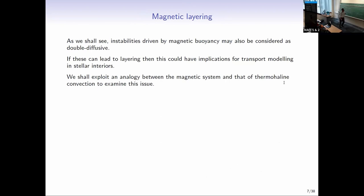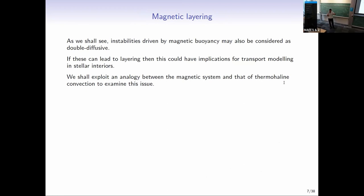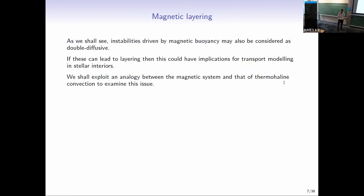Now for magnetic layering. The instability driven by magnetic buoyancy can also be considered as double diffusive. My plan is to convince you that you can turn the magnetic system into a double diffusive system, and then it's bound to have layering, because we've just seen that the double diffusive system has layering.